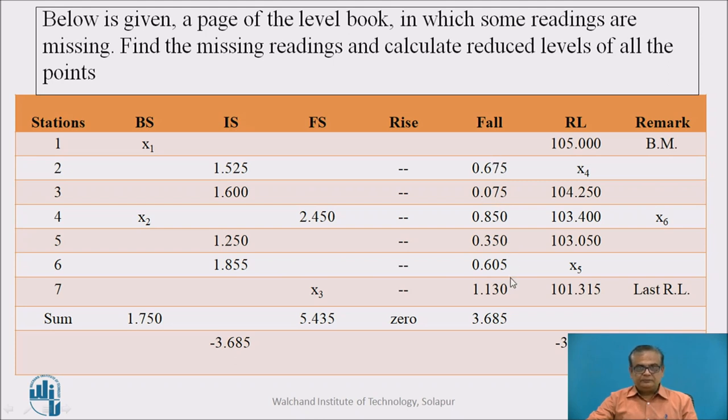Fall is given. There is no rise. The ground is continuously falling. Now, how to find these missing entries in such cases? So, in rise and fall method, we know what is done? Every present reading is compared with the next reading. That means, backside reading X1 must be compared with the next reading that is intermediate side reading of 1.525. And it is given that there is fall of 0.675 in these two readings. When there is fall, we know next reading will be more than the previous reading because fall means there is increase in reading.